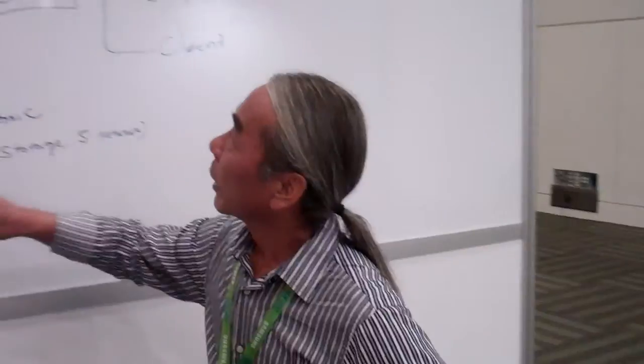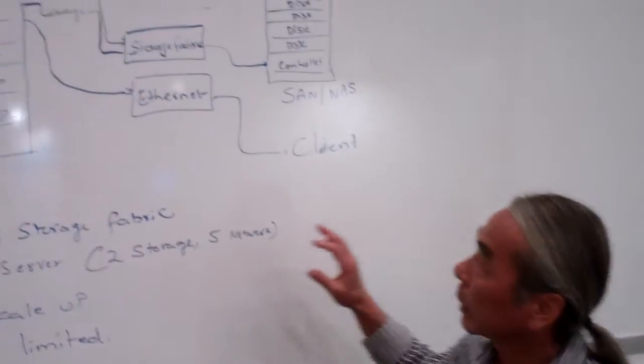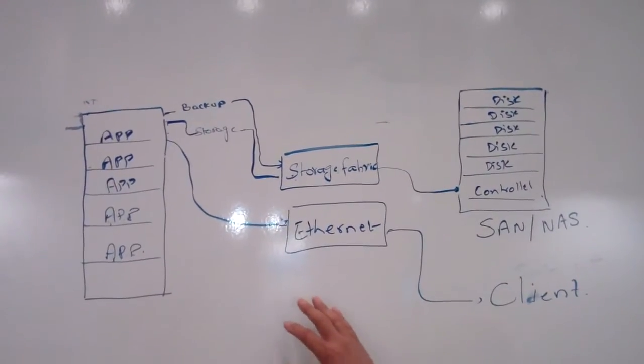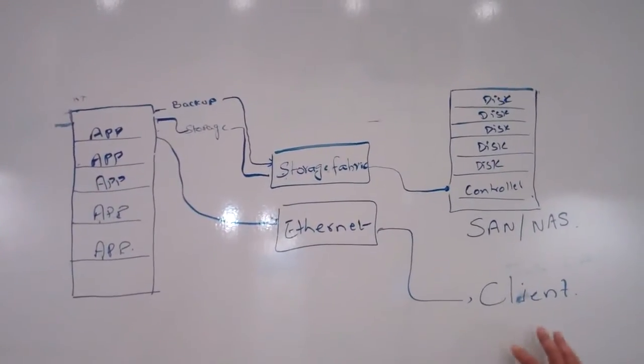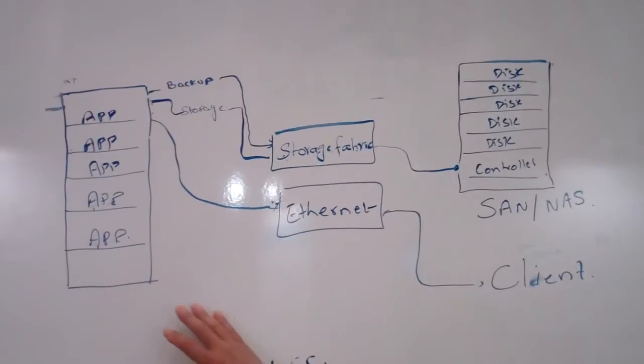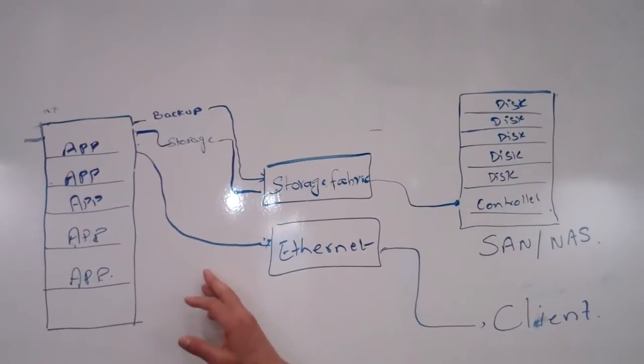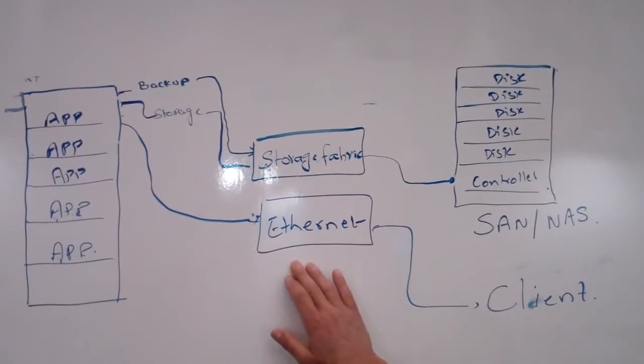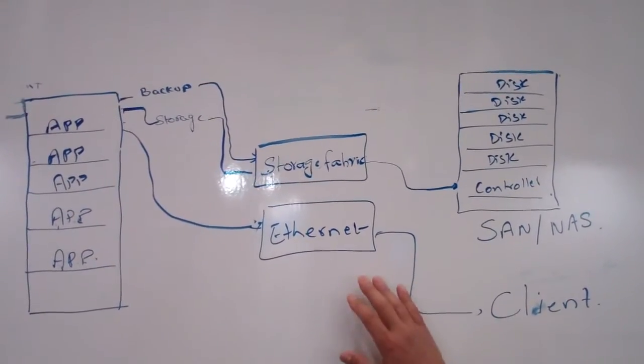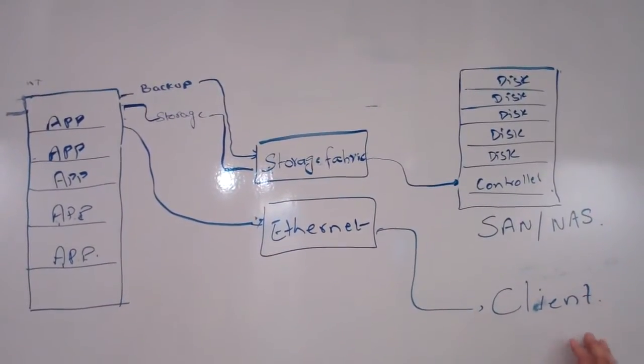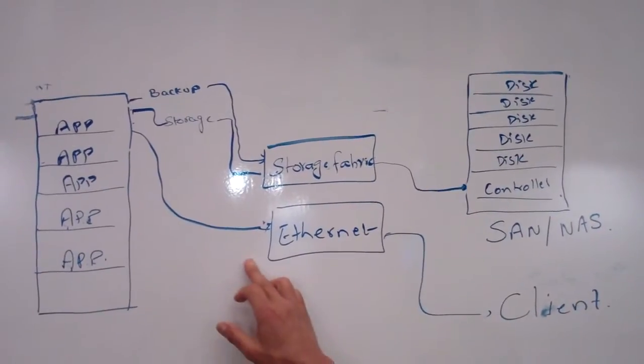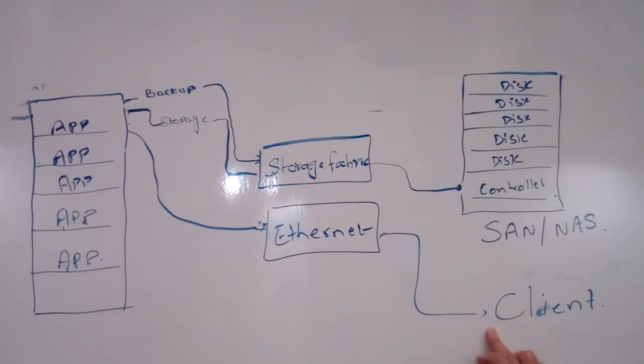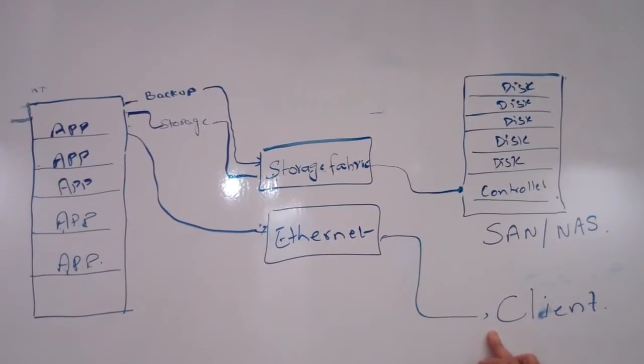Okay, so here you have a typical data center environment with your server, your networks, and your storage. You have your apps over on the left, and you have your storage fabric here, and you have your Ethernet fabric right here. And your Ethernet fabric is connecting up your client to your applications and providing all the connections for management of the hosts and all of that.